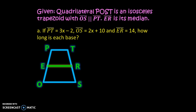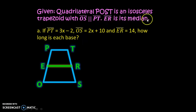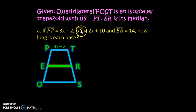Let's have an example. Given quadrilateral TOST, an isosceles trapezoid with line segment OS parallel to line segment PT, and line segment ER as its median. If PT equals 3x minus 2, OS equals 2x plus 10, and ER equals 14, how long is each base?